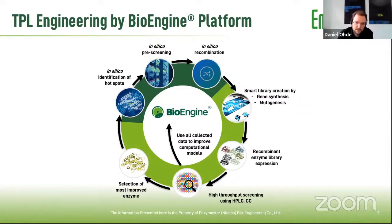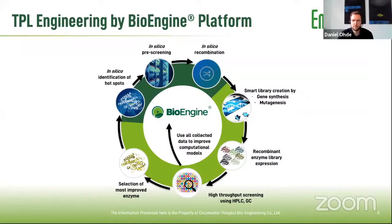These genes need to be expressed and synthesized, and then we go to high-throughput screening where we use mainly HPLC and GC. Oftentimes we have chiral compounds, so we definitely need more information than a normal screening with a color compound gives. With the information we get from this screening, we improve our computational models and can go into a next round of evolution.